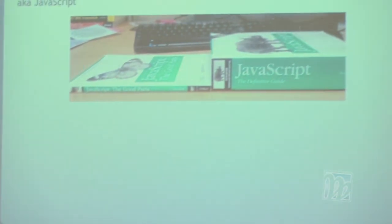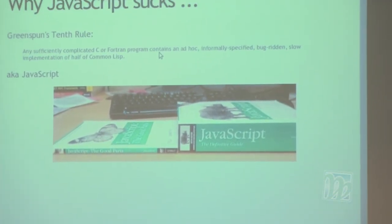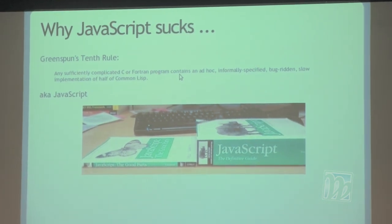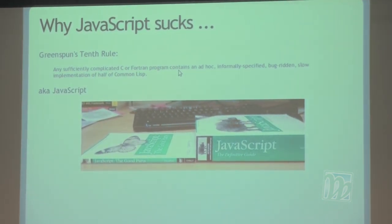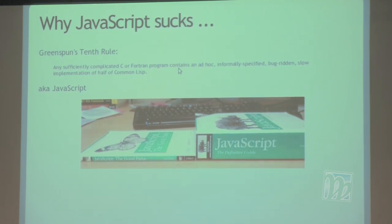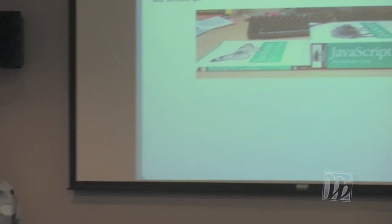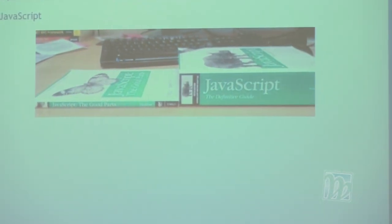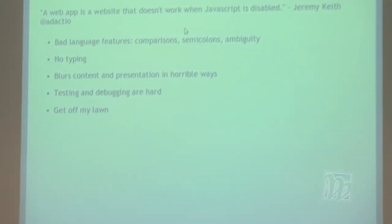Dory and I have been having this conversation for years. Greenspun's tenth rule: any sufficiently complicated C or Fortran program contains an ad-hoc, informally specified, bug-ridden, slow implementation of half of Common Lisp. And if you look at JavaScript, it really is kind of Scheme — a Common Lisp implementation — with a C or Java-like syntax. Also, this is JavaScript: The Good Parts, and that's JavaScript: The Definitive Guide. So all the reasons JavaScript sucks — you all know this stuff.